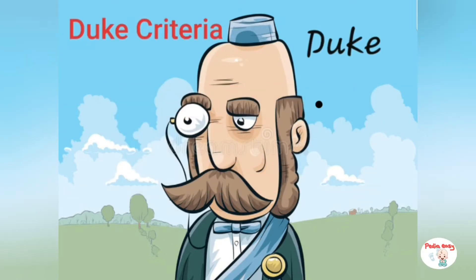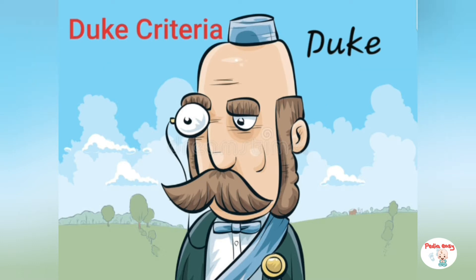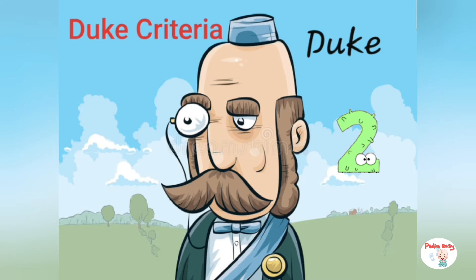Once upon a time there was a Duke who lived in a village — Duke for Duke criteria, easy to remember. The Duke was known for two major things, which should make us remember the two major criteria of the Duke criteria.